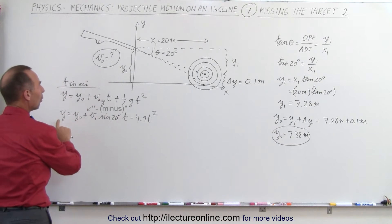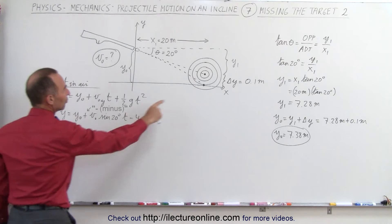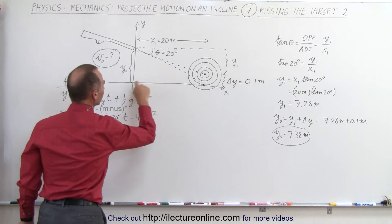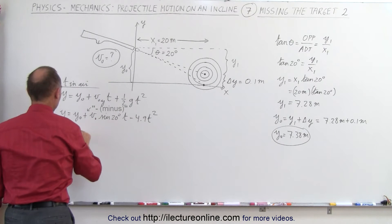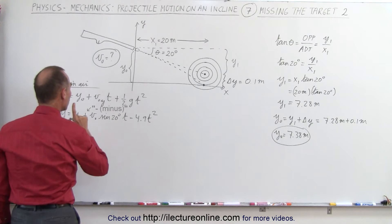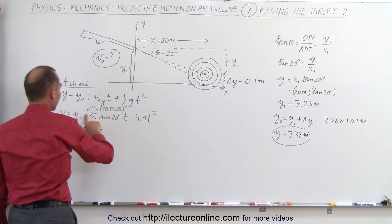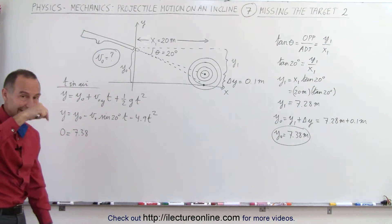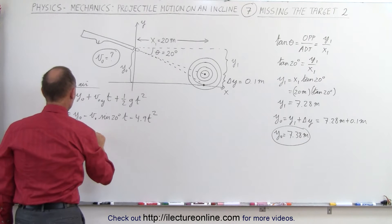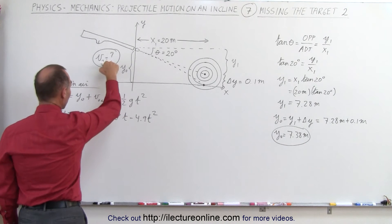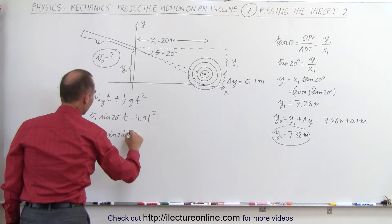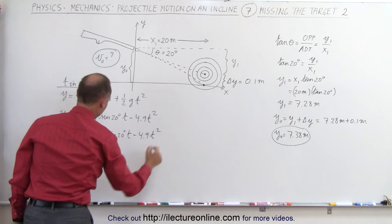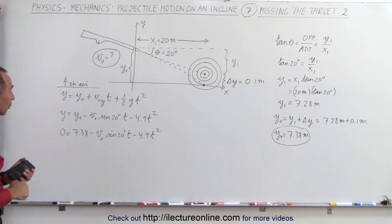Plugging in the values we know: y is the final height, and that would be 0. When we get to that point, we call y equals 0 equals the initial height y sub nought, which is 7.38. And be careful here — it's a negative direction, so we make this a negative, because we know it's in the negative direction. This becomes minus v sub nought — which we don't know, we're asking for that — times the sine of 20 degrees times t minus 4.9 t squared. So now we have an equation for time in the air in the y direction.